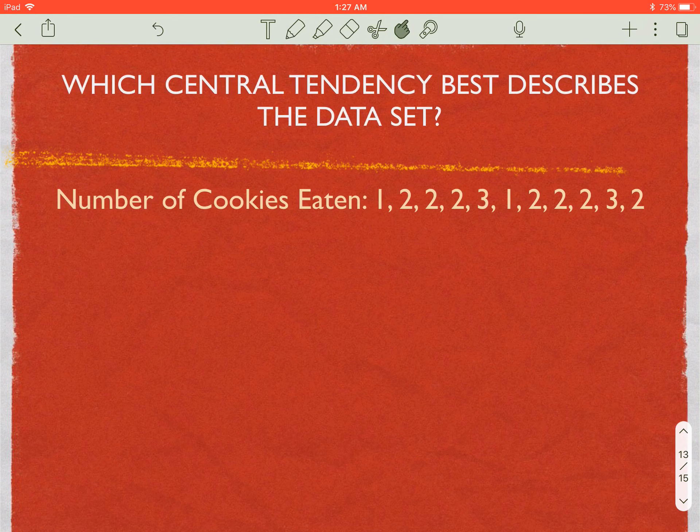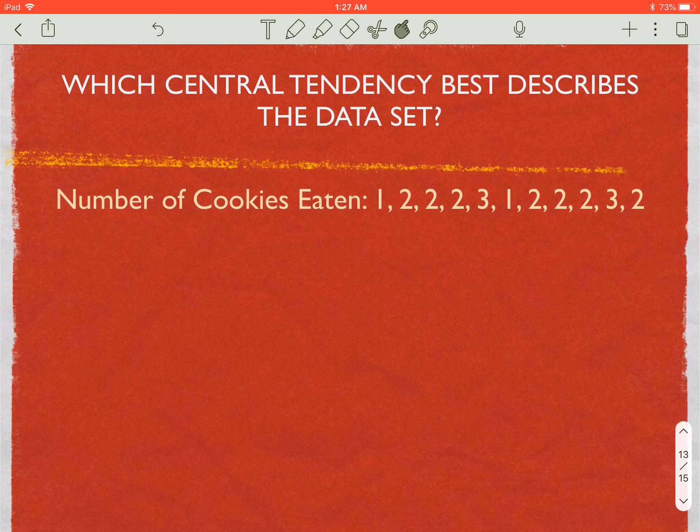Cookies eaten: 1, 2, 2, 2, 3, 1, 2, 2, 2, 3, 2. On this one, I would say I would definitely argue that there could be two possible answers on this one that I would accept. The first one I would accept, well, is there an outlier? No, there's nothing that's significantly bigger or smaller.